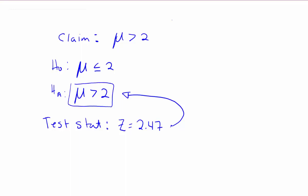In order to calculate the p-value in this situation, we draw a bell curve and make sure that bell curve is basically blank except for the fact that we have a z-axis at the bottom with a zero in the center.